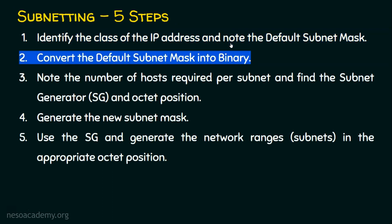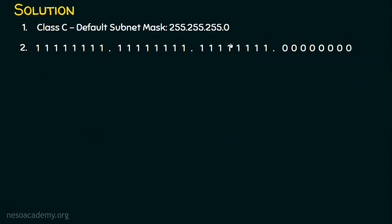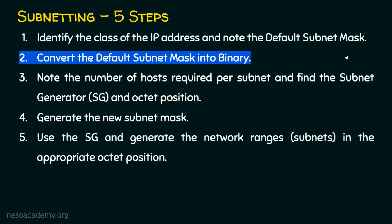Step two: we will convert the default subnet mask into binary. When we convert 255.255.255.0 into binary, we get all ones in the first three octets because 255 means all bits are one in an octet. The last octet is zero, so we fill it with zeros. Step number two is also done.